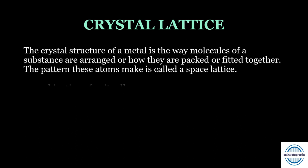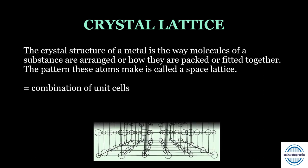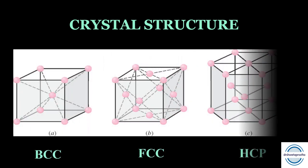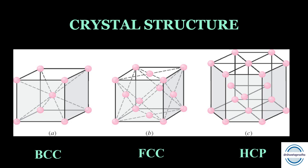Before going further, let us understand the basics of the crystal lattice. The crystal structure of a metal is the way the molecules of a substance are arranged — how they are packed or fitted together. This pattern of atoms makes a space lattice: a combination of unit cells arranged together. The basic three types of crystal structures are BCC (body centered cubic), FCC (face centered cubic), and HCP (hexagonal closed packed).